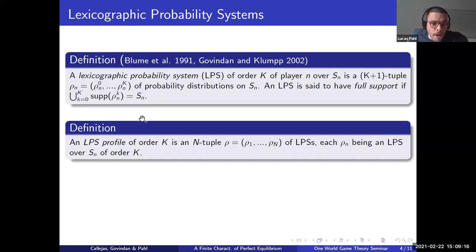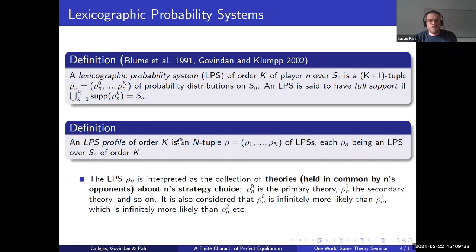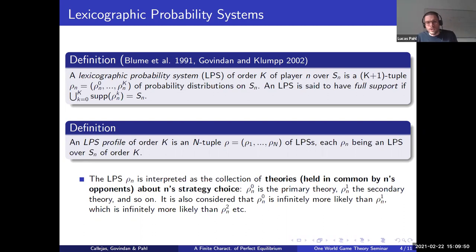An LPS profile is an assignment of an LPS for each player. There is a natural interpretation: an LPS of player n can be interpreted as the collection of theories that the opponents of n hold about what n is going to play. So phi-zero-n is the primary conjecture, phi-one-n is a secondary conjecture, and so on. phi-zero-n is considered infinitely more likely to be played than phi-one-n, which is infinitely more likely than phi-two-n, creating a hierarchy.